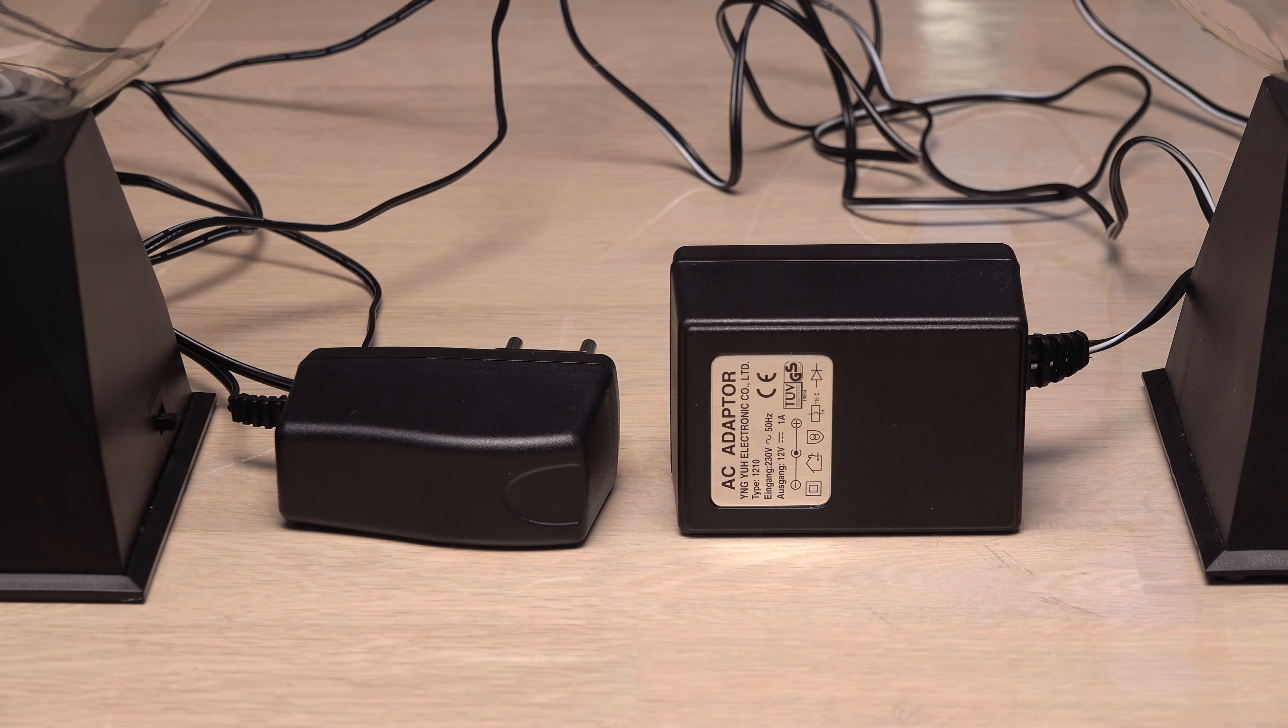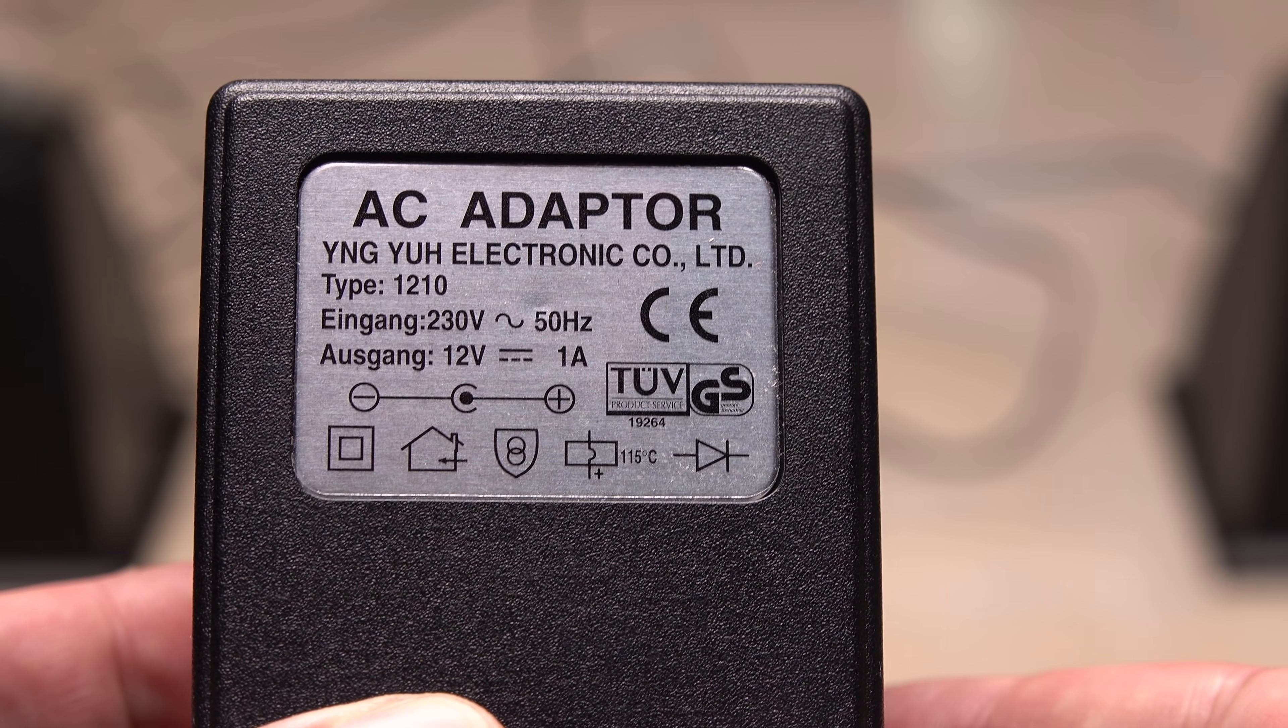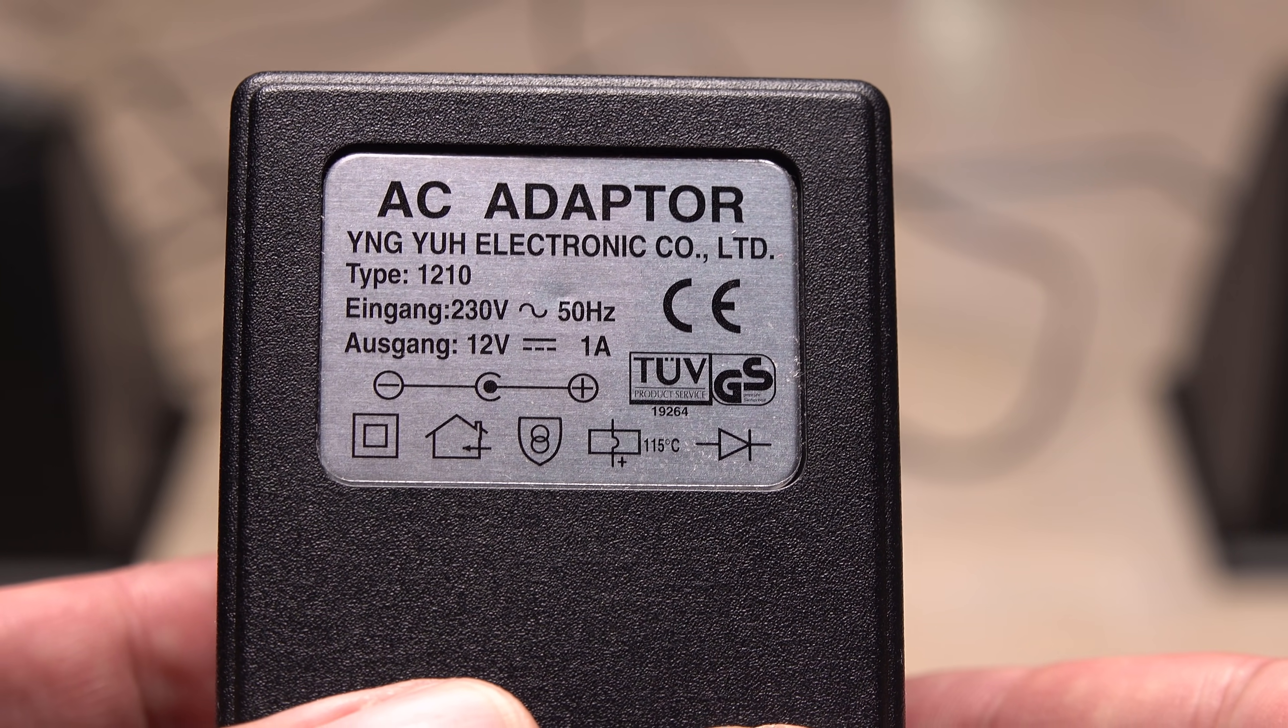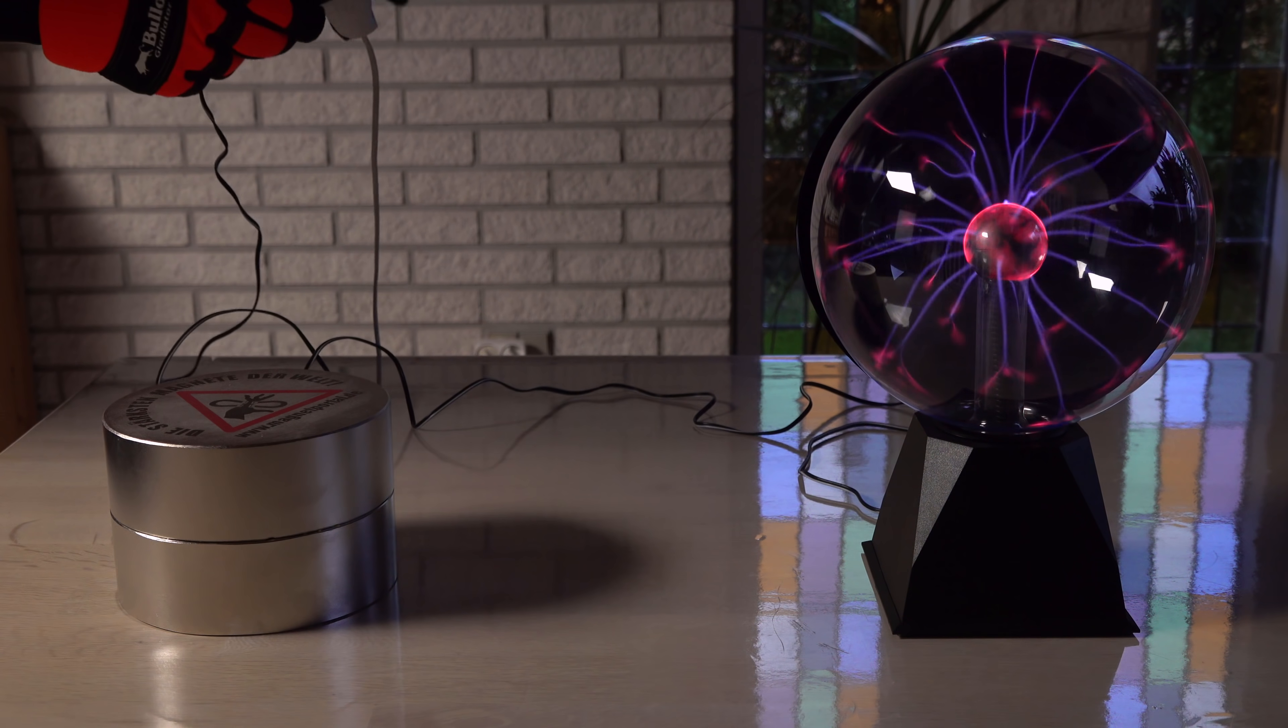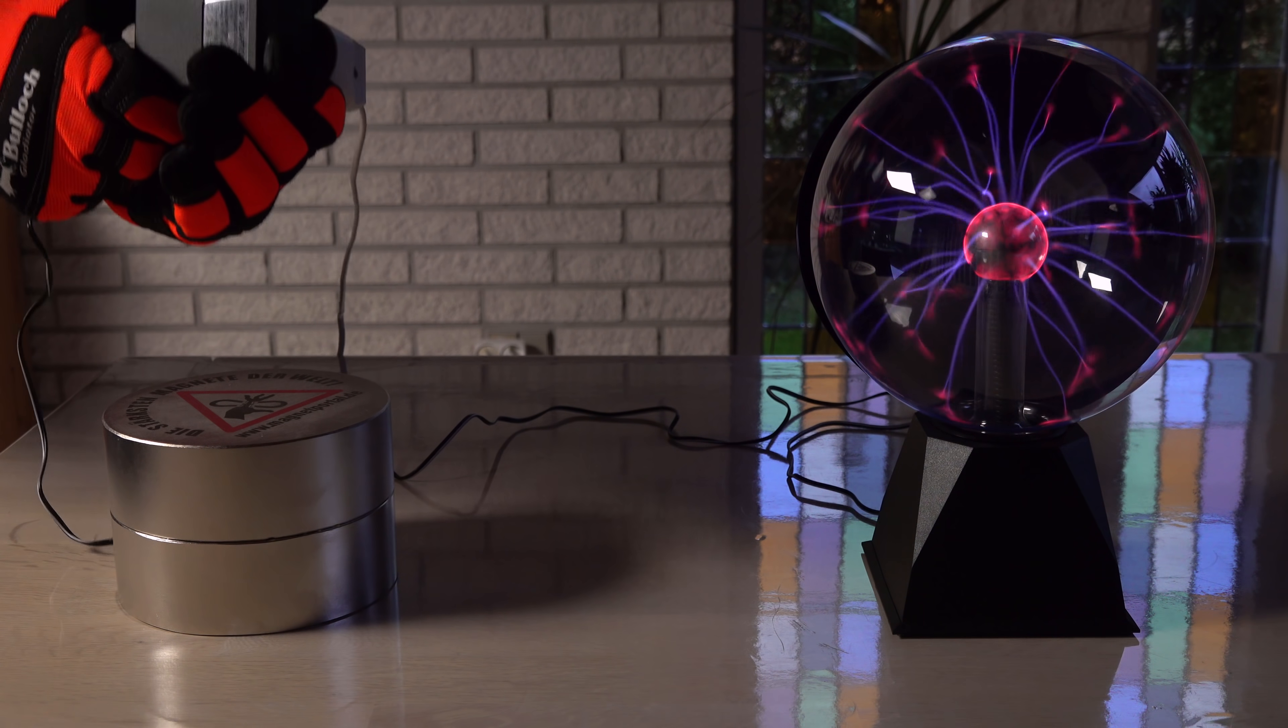The plasma globes have an AC adapter for the electronics, and this heavy one has a good old-fashioned transformer inside it. Will it have a similar effect on the plasma if I put this transformer near the magnet? It's a lot of iron to put near such a big magnet, so this will be interesting.